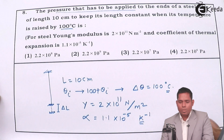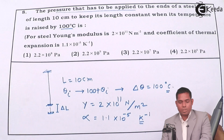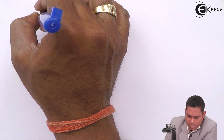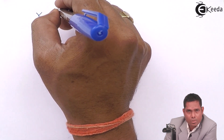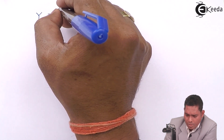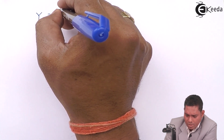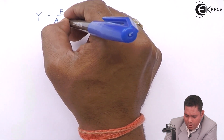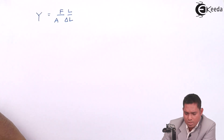To find the pressure, we use Young's modulus, which is defined as longitudinal stress divided by longitudinal strain: Y = (F/A) / (δL/L). This is the formula for Young's modulus.